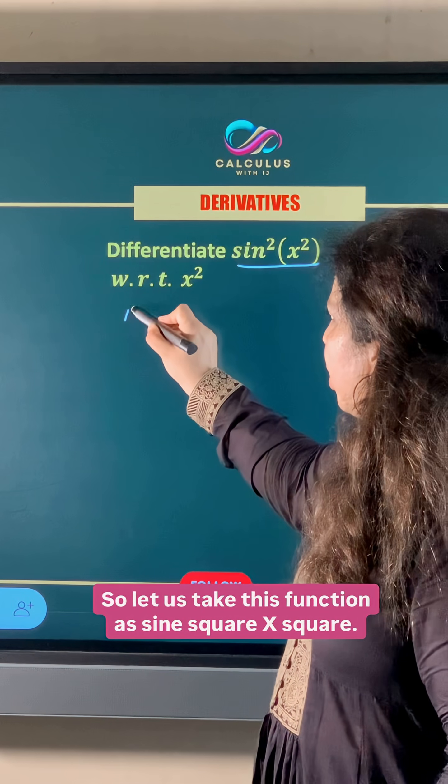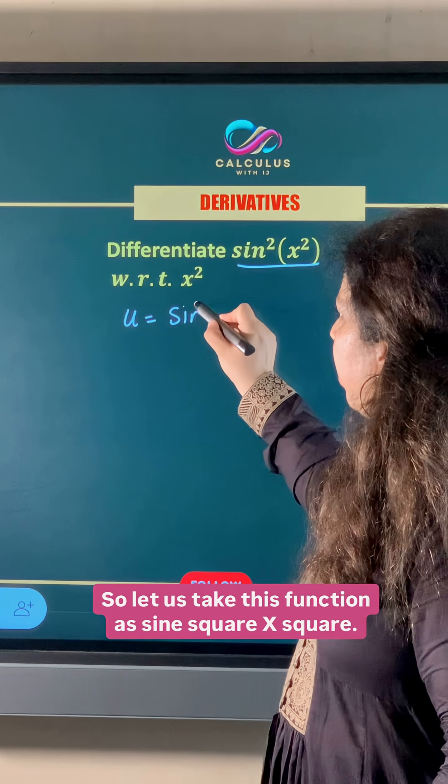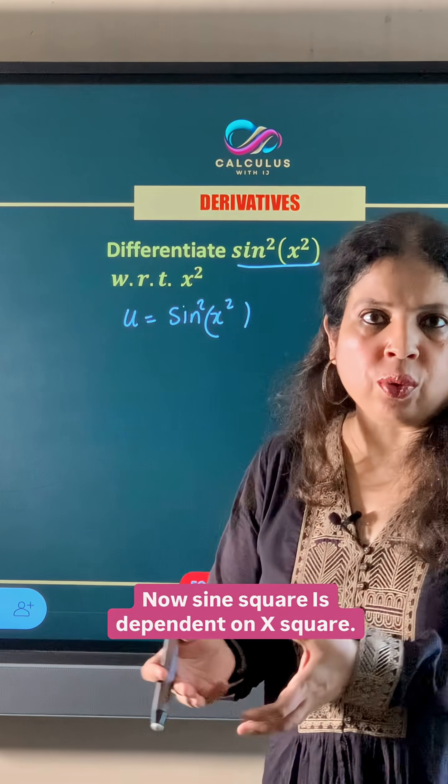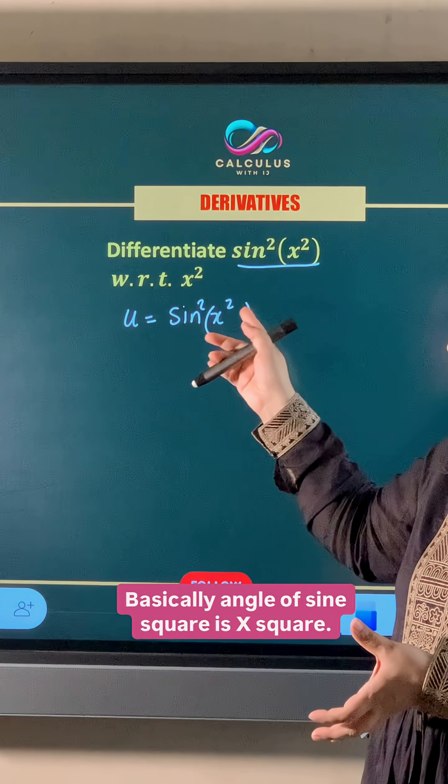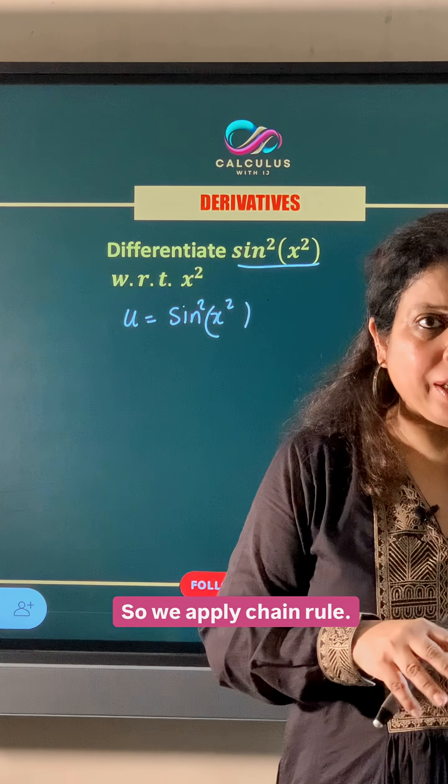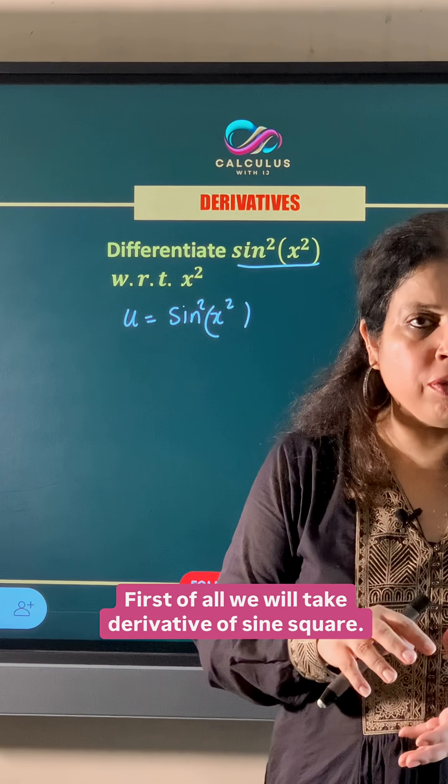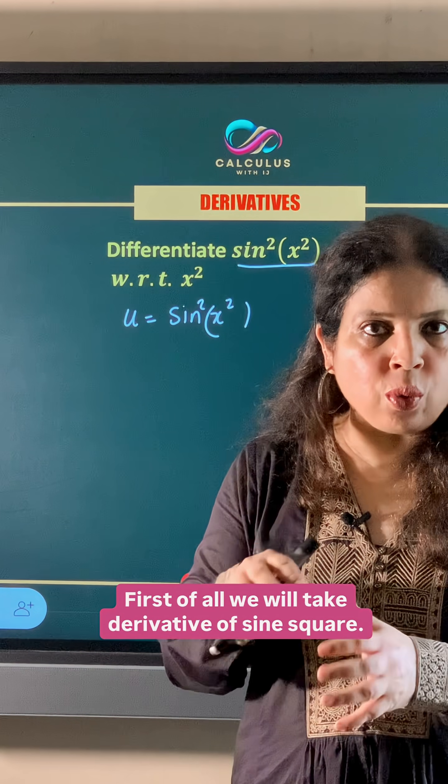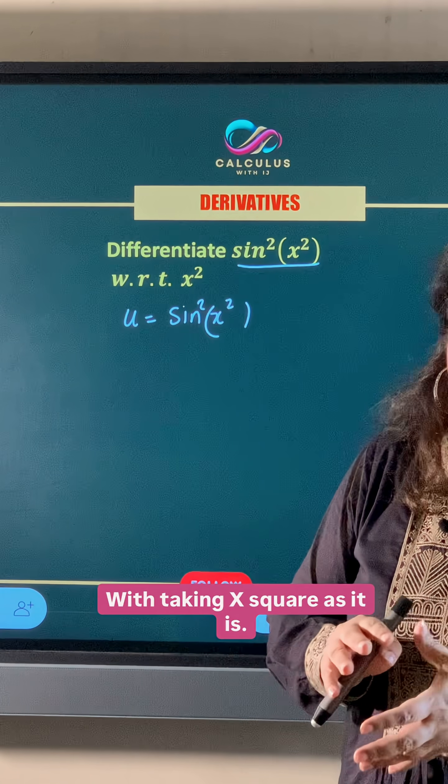So let us take this function as u = sin²(x²). Now sine square is dependent on x². Basically the angle of sine square is x². So to apply chain rule, first of all we will take derivative of sine square with taking x² as it is.